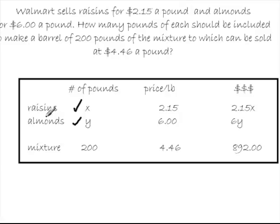As I fill this in, I've got raisins, almonds, and the mixture. I know that a total of 200 pounds in mixture is required, so I'll put a 200 down here at the bottom in the mixture. Here's the original price of the raisins per pound, of the almonds per pound, and here's the price of the mixture per pound. We want to sell the mixture at $4.46 a pound.